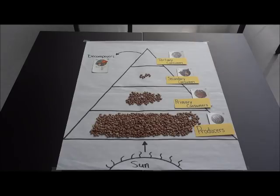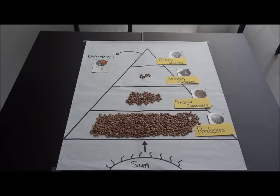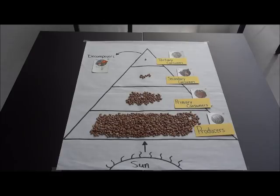Next, we need to figure out how many beans we should move to the next level. We know that tertiary consumers eat secondary consumers, therefore tertiary consumers will gain their energy from our secondary consumers. We also know that 10% of the energy is transferred from one level to the next, so we are going to move only one bean up to our tertiary level to represent the energy transfer from our secondary consumers to our tertiary consumers. I have moved one bean from our secondary consumer level to our tertiary consumer level. Now our energy pyramid is complete, and we can see that the energy has transferred from the producers all the way to the tertiary consumer.